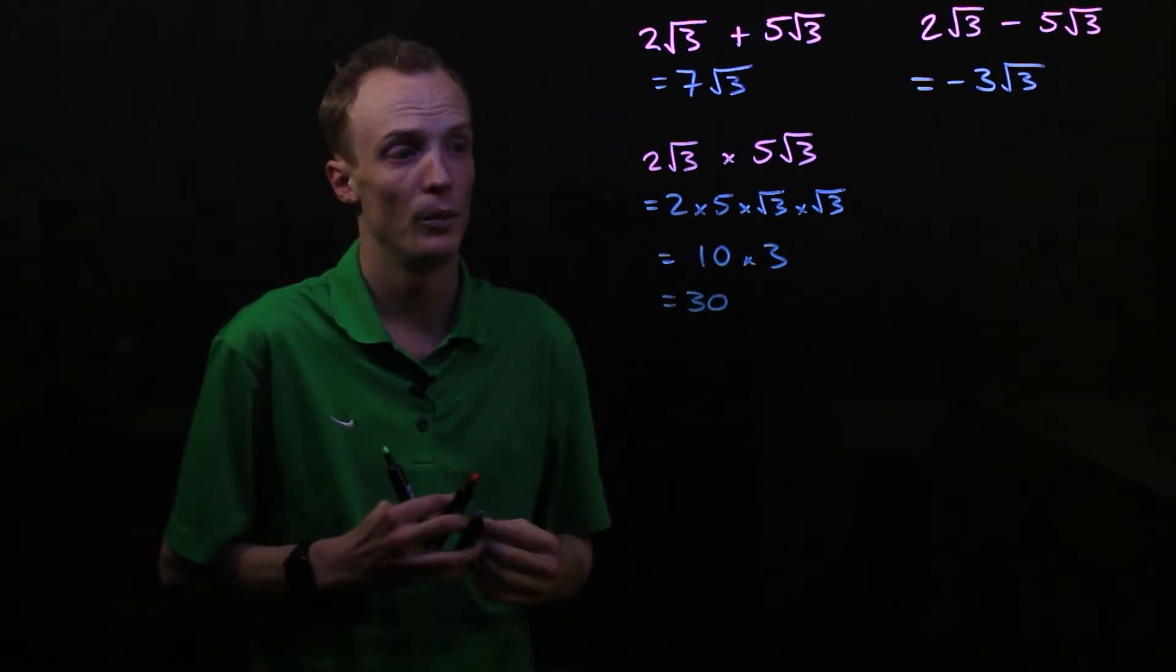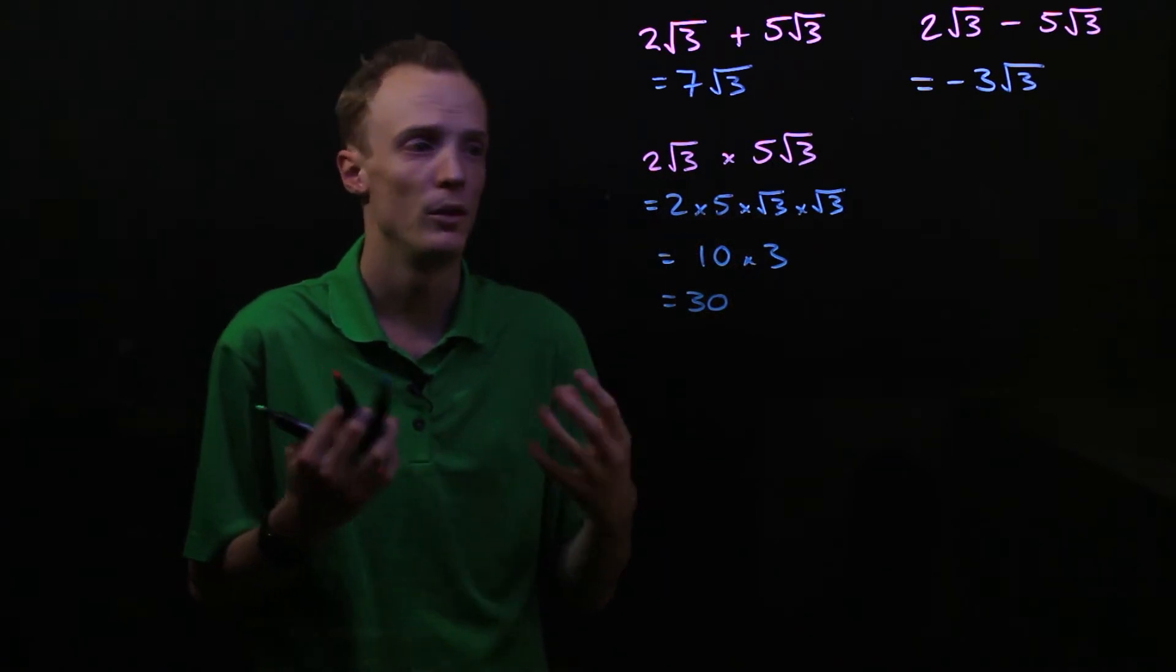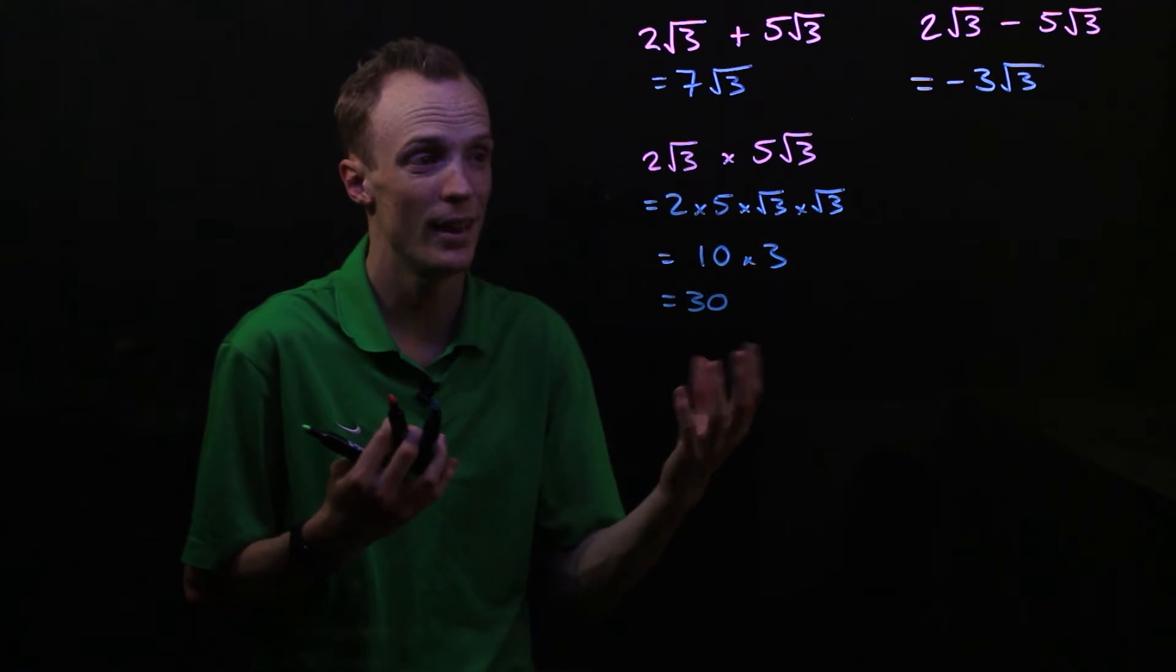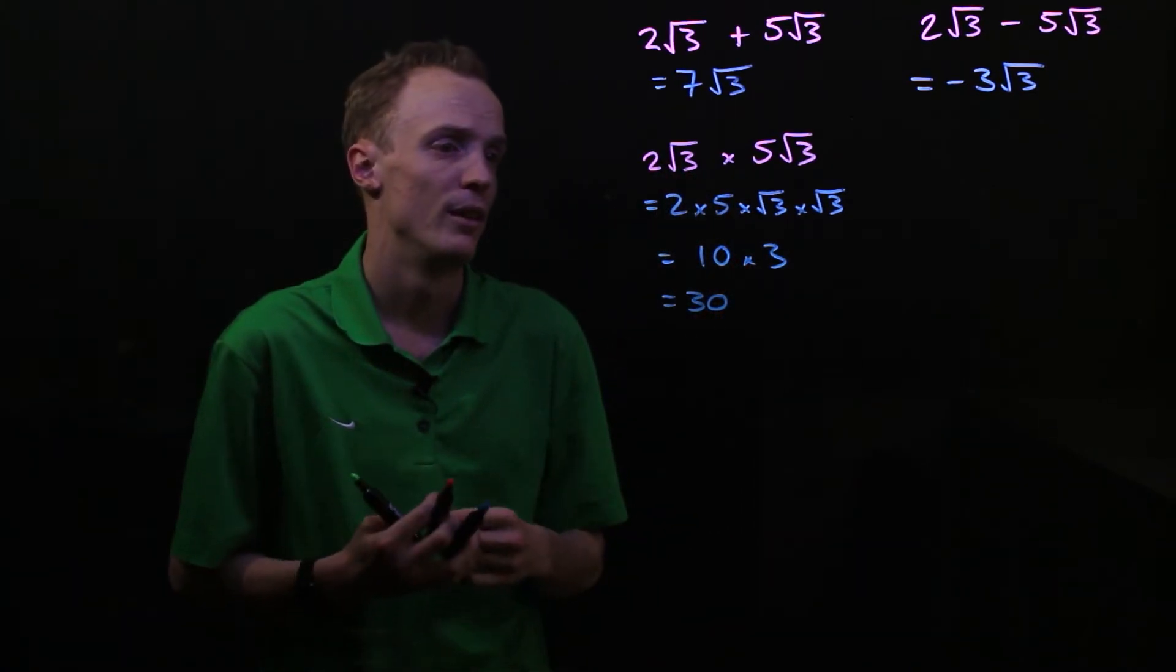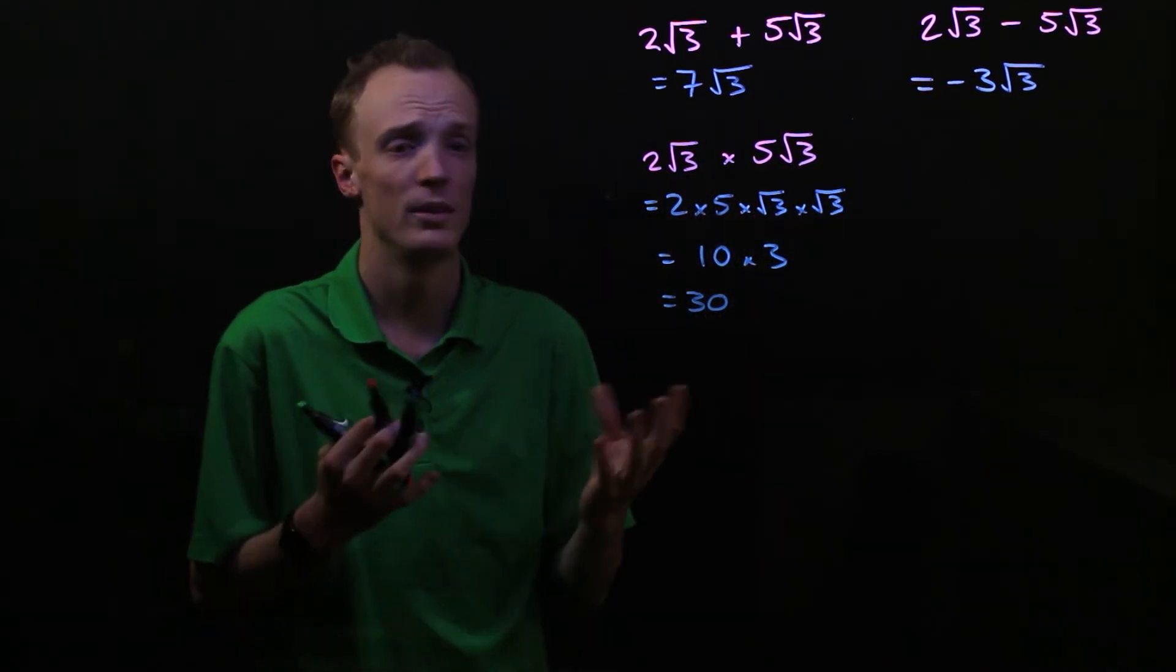In essence, what we're still following is our algebraic rules where when we're multiplying two terms together, we multiply the coefficients together and we multiply that variable term. But in this case, that variable term is a surd and we actually know the value of it, so we're multiplying the surd part of each term together as well.